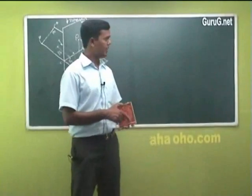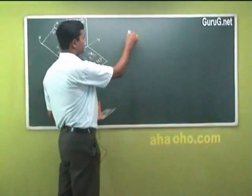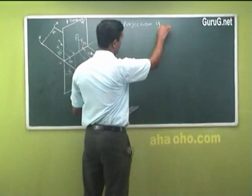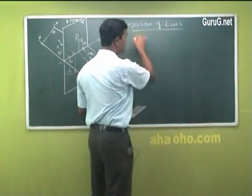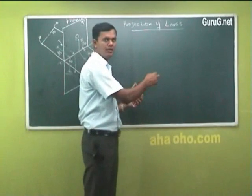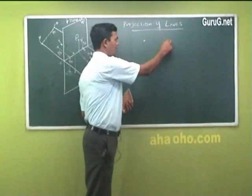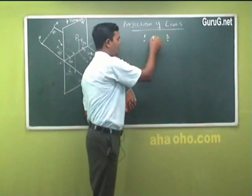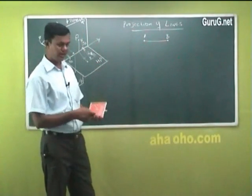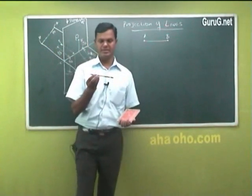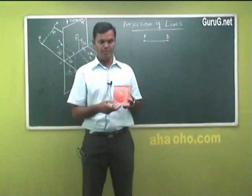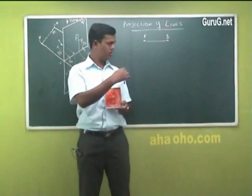Now we have seen what points are. I'll go to the second part: projection of lines. Basically, a combination of two points becomes a line. If one point is A and the other point is B, and you join these two points, it becomes a line. Now consider this pencil as a line — this will be your VP and HP, your board and floor, the vertical plane and horizontal plane.